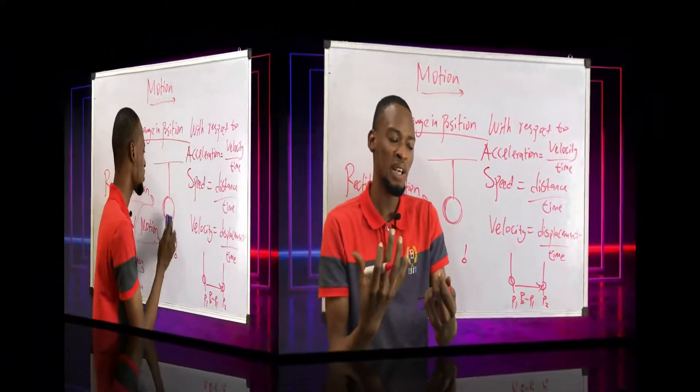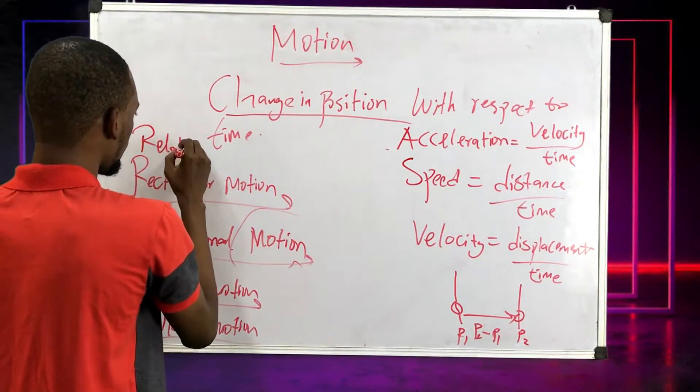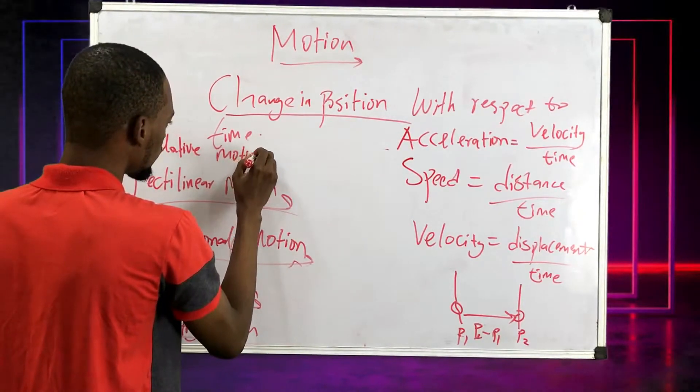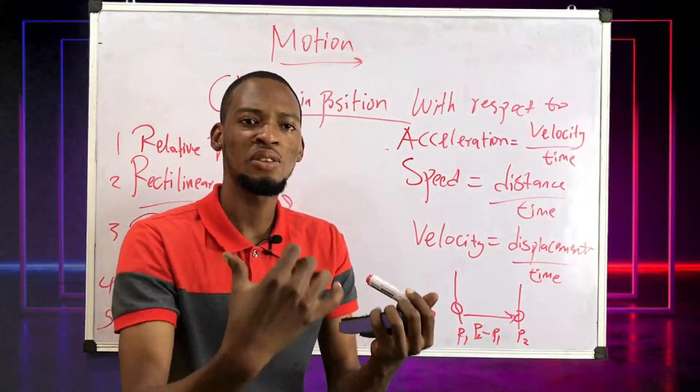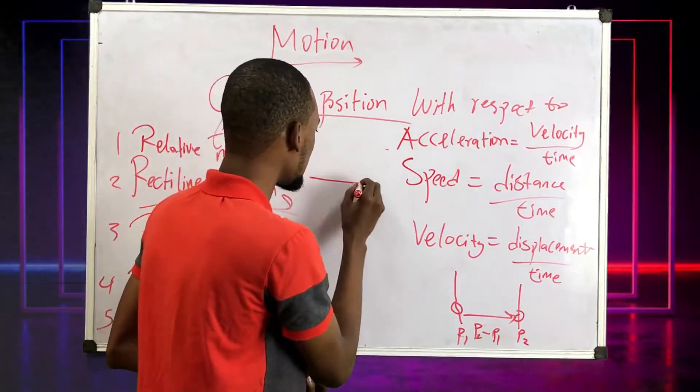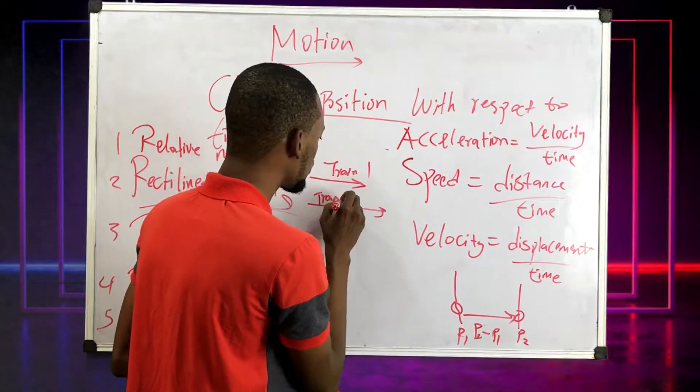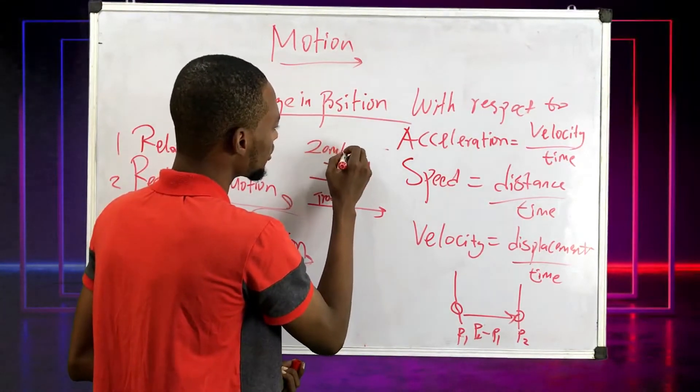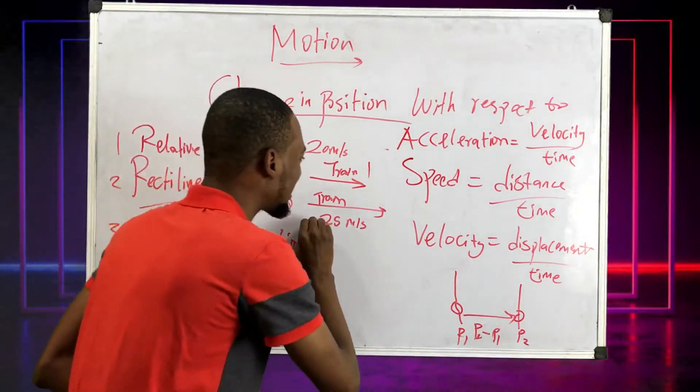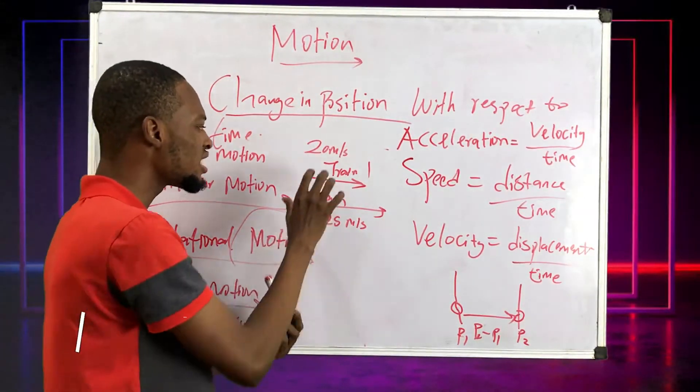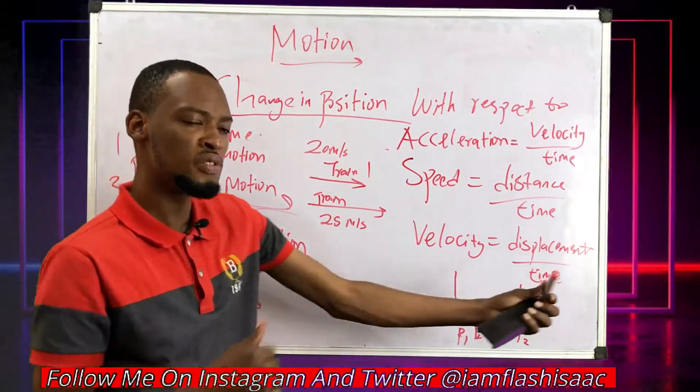Another type of motion is relative motion. Relative motion is the motion of a body relative to another. Look at this common example: let's say you are traveling in a train, this is train one. Another train is passing, train two. This one is moving at 20 meters per second velocity, this one is 25 meters per second. As this train overtakes this one, you will not feel the obvious 25 meters per second. You won't feel the difference in speed, which is 5 meters per second.